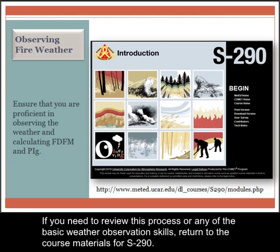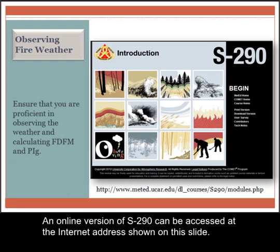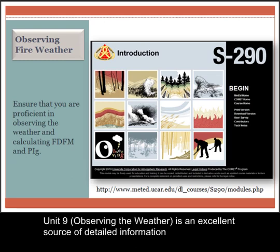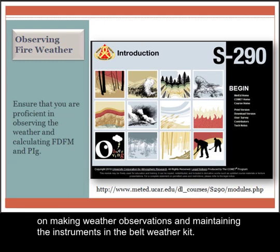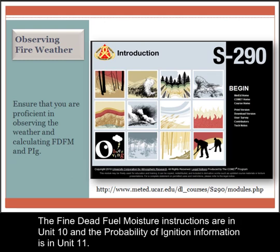If you need to review this process or any of the basic weather observation skills, return to the course material for S290. An online version of S290 can be accessed at the internet address shown on this slide. Unit 9, Observing the Weather, is an excellent source of detailed information on making weather observations and maintaining the instruments in the Belt Weather Kit. The fine dead fuel moisture instructions are in Unit 10 and the probability of ignition information is in Unit 11.